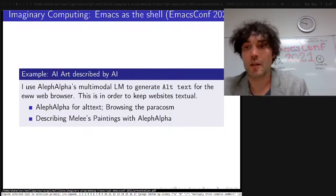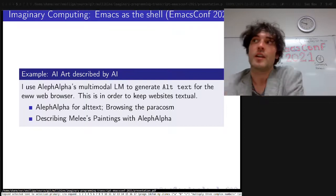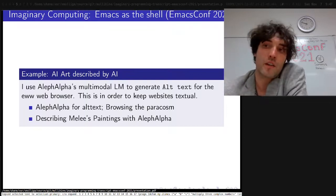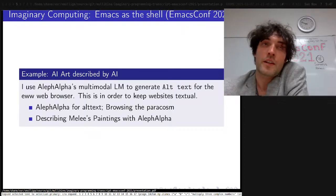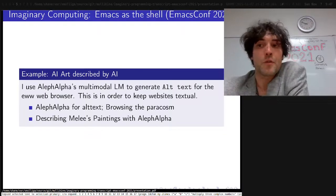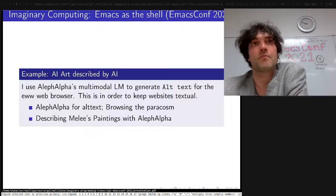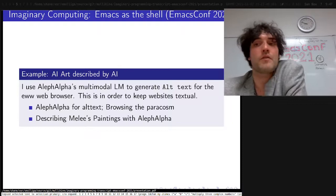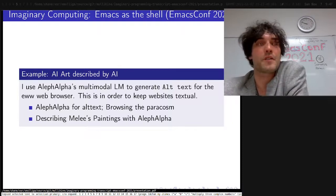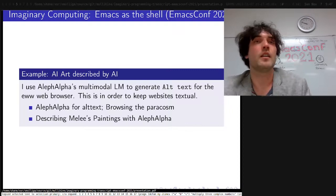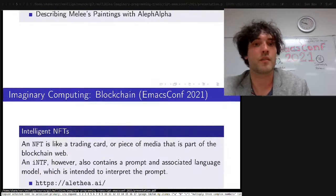Just a couple of days ago, I took Aleph Alpha's world model API and I plugged it into Emacs's w3 browser. And now I have a way of generating text for images, so I can stay in my text-only Emacs — which is the way it should be.